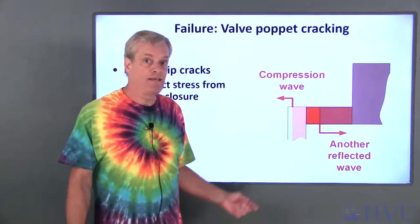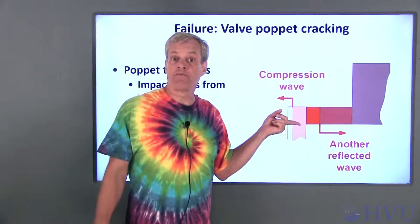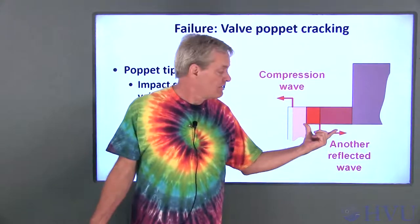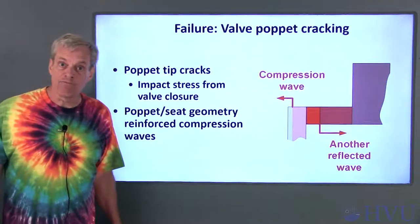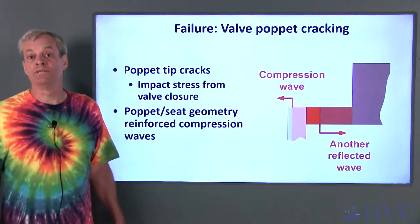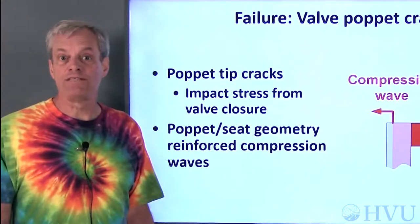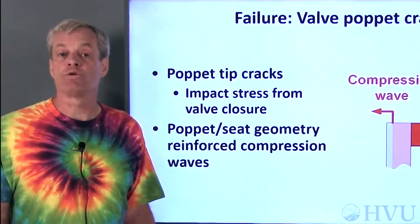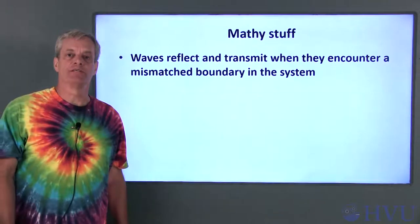That had the effect of intensifying the stress behind the reflected wave. When the reflected wave hit the tip of the poppet, a lot of the wave was reflected back into the nose again. The compression waves kept bouncing back and forth in the nose of the poppet, which kept building up the stress in the nose. The failure was mostly due to the shape of the poppet reinforcing the stress waves.